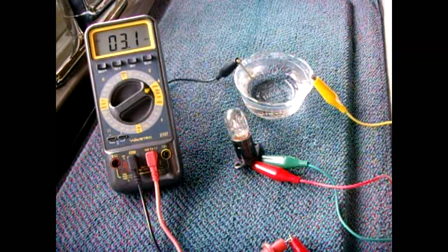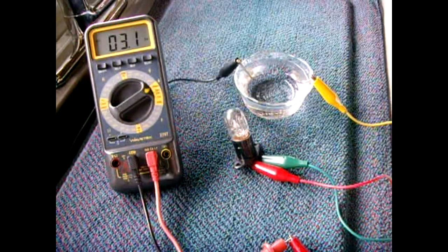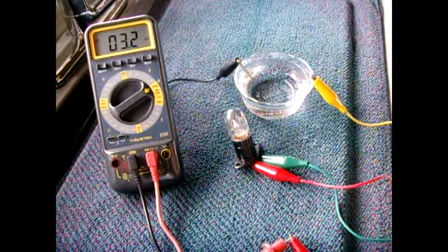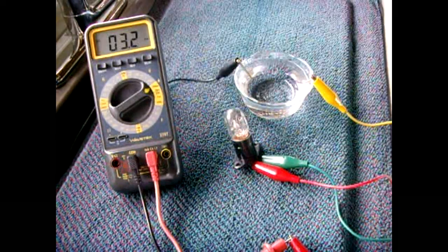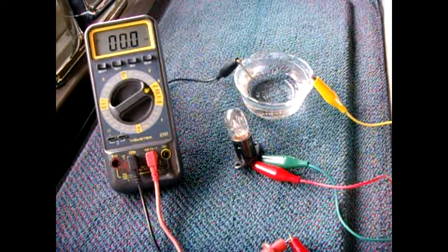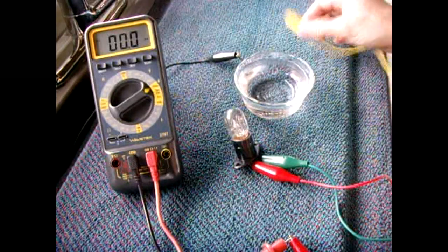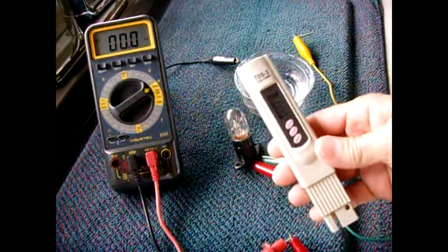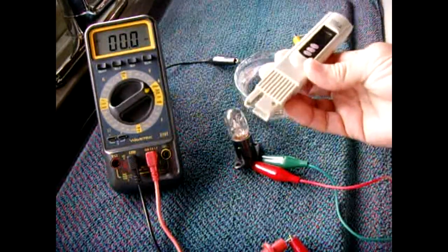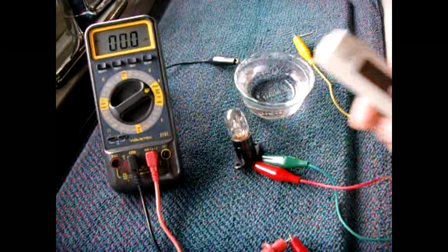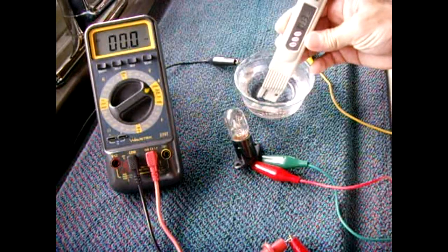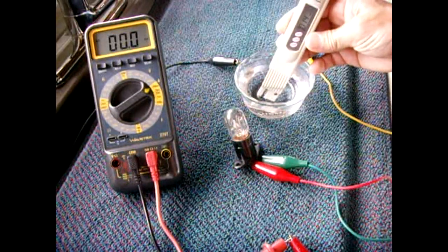The reason why there's very little current flowing through this water sample is because the water sample has very little dissolved solids in the water. Now, I'm going to turn the power off so I can explain further. This sample of water was from my reverse osmosis system. What a TDS meter does is it measures total dissolved solids in a water sample, and it uses conductivity of the water to give you that reading.